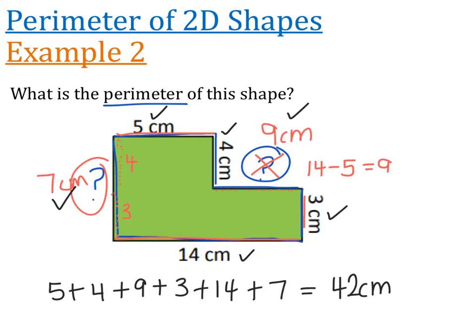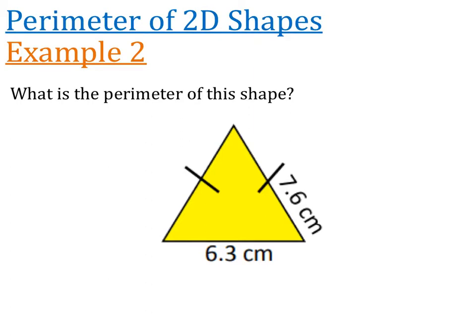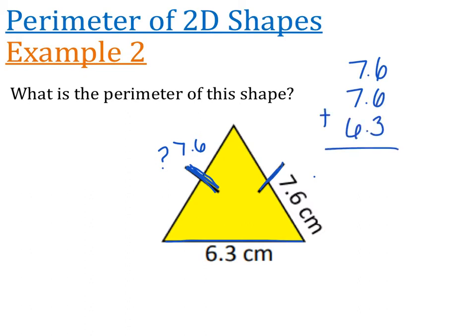Last example: what's the perimeter of this triangle? We have the bottom as 6.3 cm and the right side as 7.6 cm, but the left side is missing. The two tick marks on the sides tell us this is an isosceles triangle with two equal sides, so the left side is also 7.6 cm. Adding 6.3 plus 7.6 plus 7.6 — lining up the decimals — gives a perimeter of 21.5 centimetres.